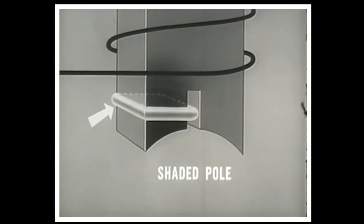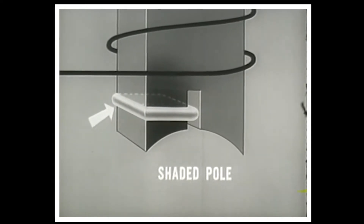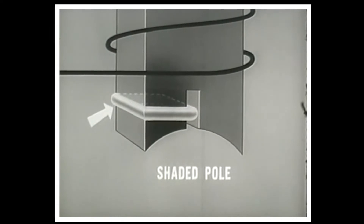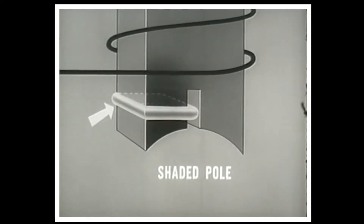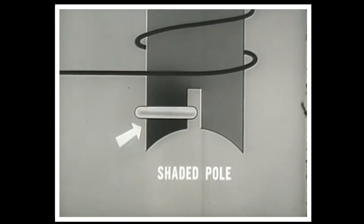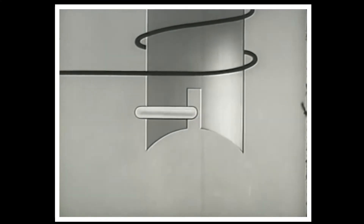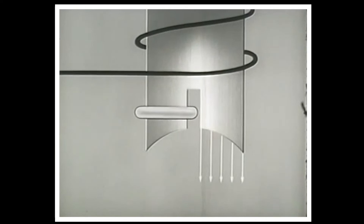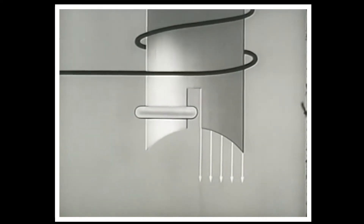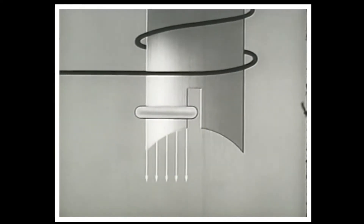One method is the use of shaded poles in the field. A shaded pole is attained by placing a copper ring in a slot over half the pole. The copper ring on the shaded half of the pole increases the inductance of that half, causing the magnetic field of the shaded half of the pole face to lag behind that of the unshaded portion, creating a rotational effect.